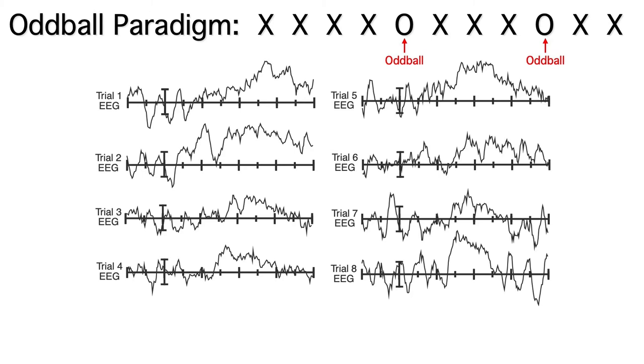This experiment used an oddball paradigm in which subjects pressed one of two buttons on each trial to indicate whether the stimulus was an X or an O. The O's were rare, so we call those the oddball stimuli. Here we're showing the EEG epics from 8 oddball trials.